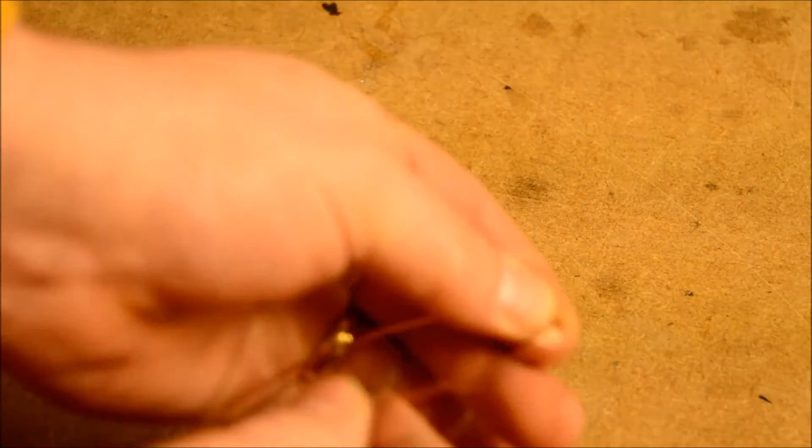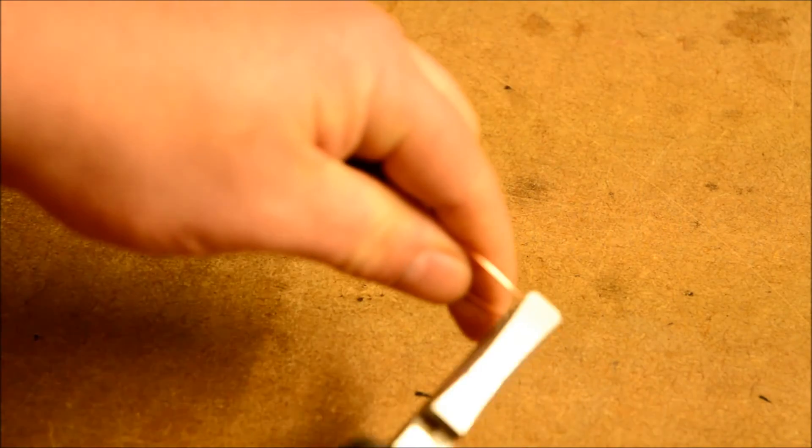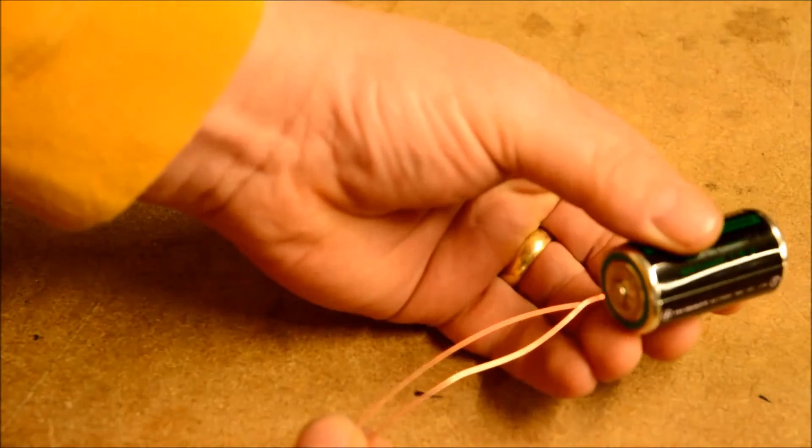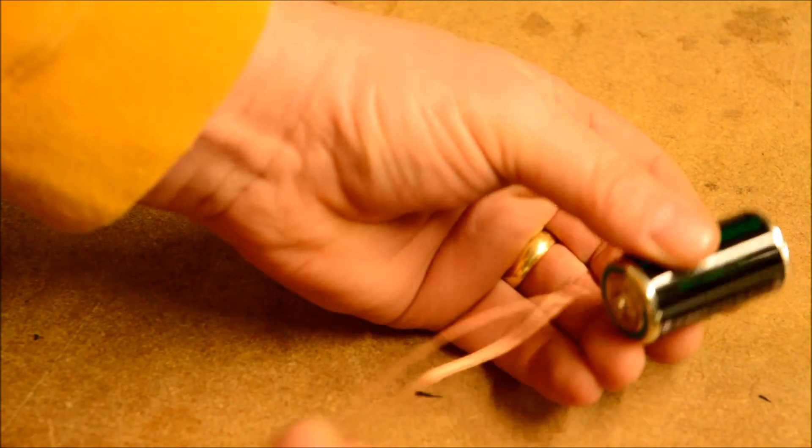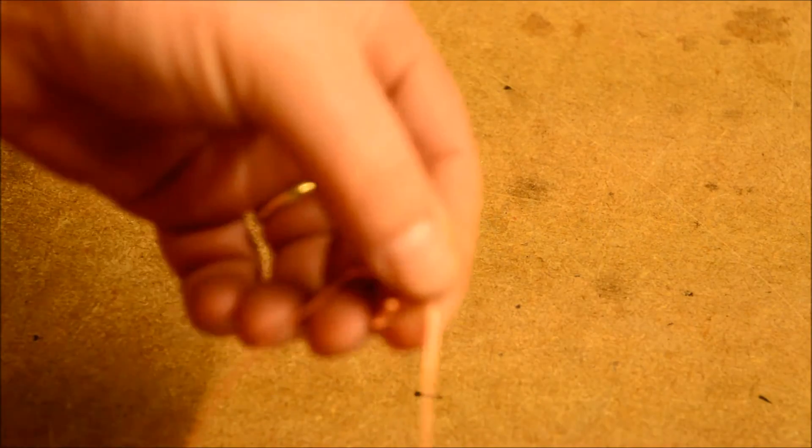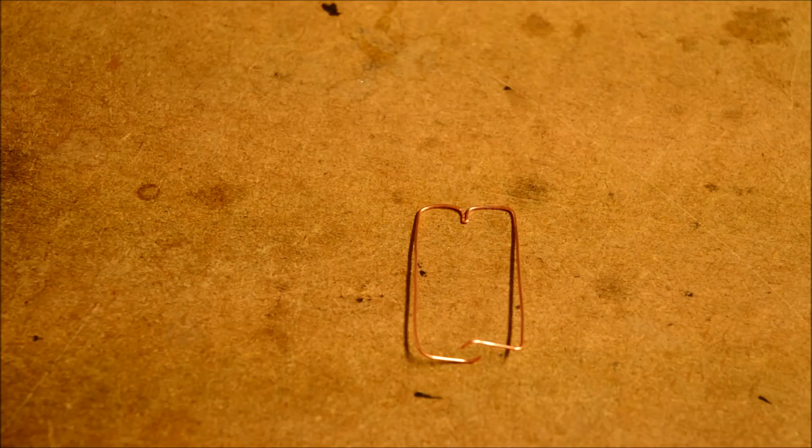First thing we're going to do is bend the wire in half and squash the end flat. This creates a little spike which fits nicely into the dimple. So then a little bit of bending, and when you've taken a little bit of time over it you should end up with something that looks like that.